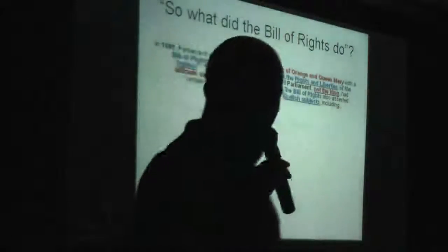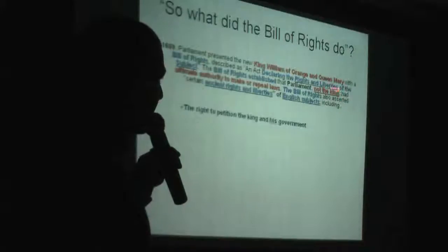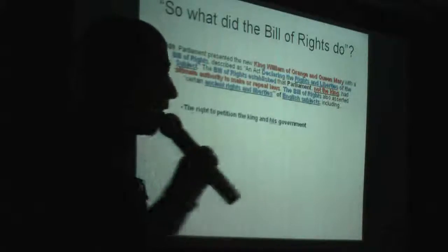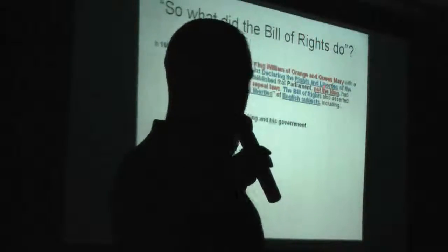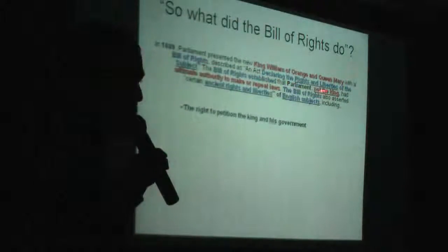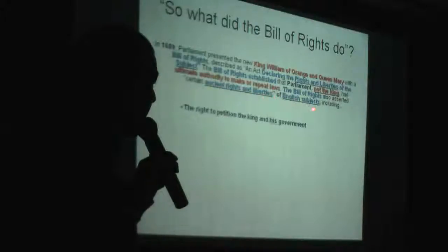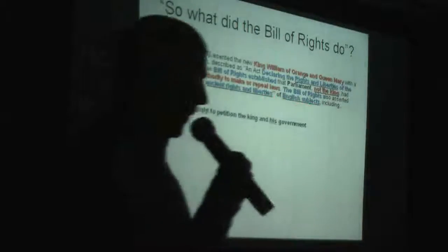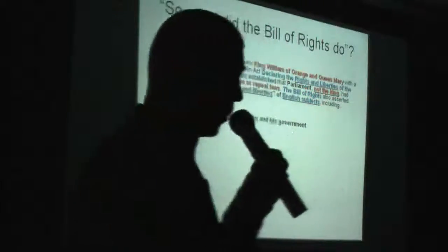What does the Bill of Rights do? Well, Parliament presented the new King, William of Orange, with the Bill of Rights — described as an act declaring the rights and liberties of the subject. Before, you had rights and responsibilities; now it's changed — you've got liberties of the subject. The Bill of Rights established that Parliament — not the King — had ultimate authority to make or repeal laws. The Bill of Rights also asserted some ancient rights and liberties of English persons or corporations subject — which we could call slaves, or things.